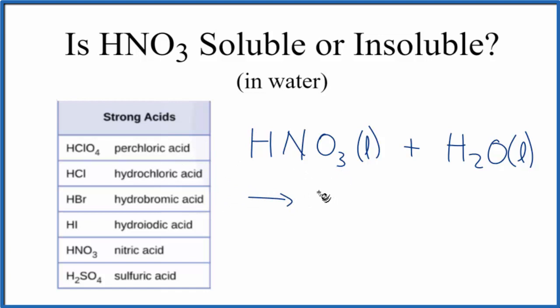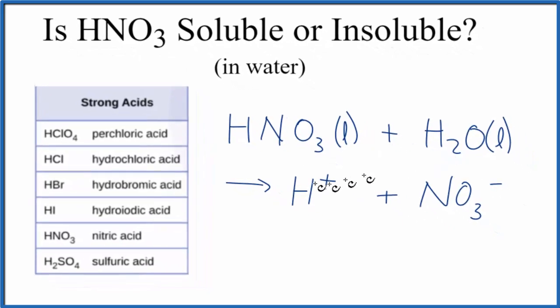When we do that, the nitric acid, because it's a strong acid, it's going to break apart into its ions. We're going to get H+ plus the nitrate ion NO3-.